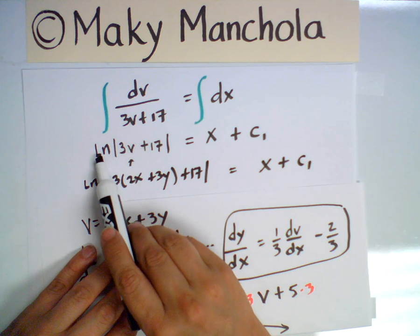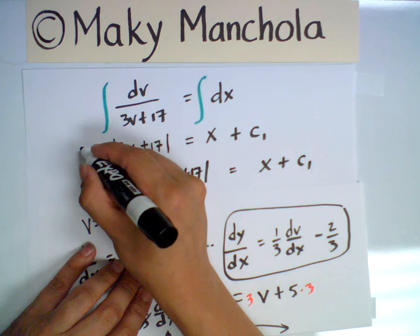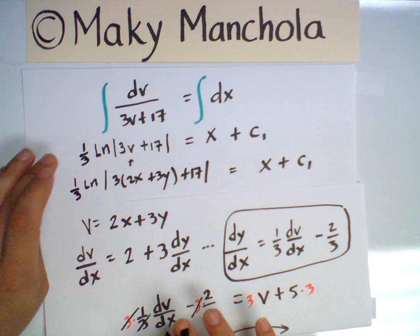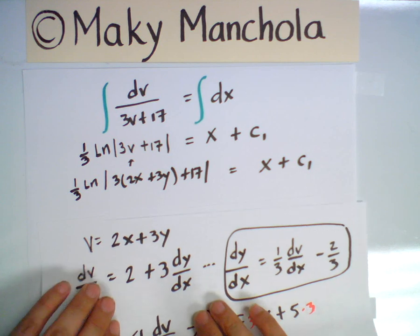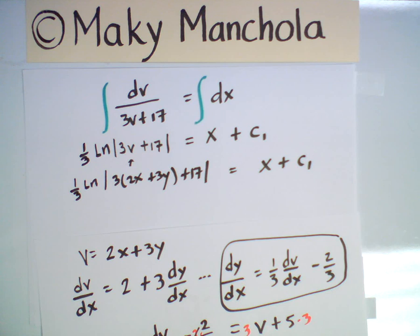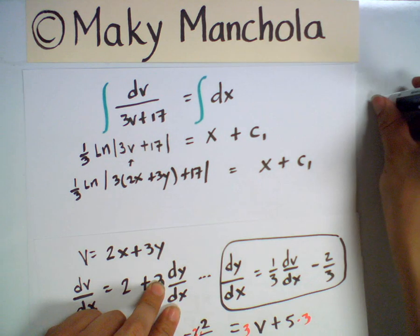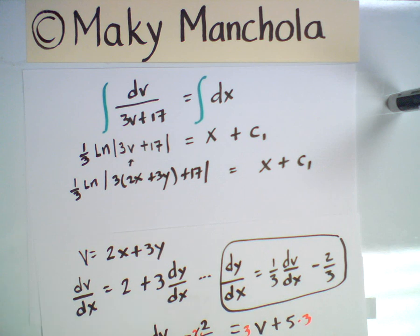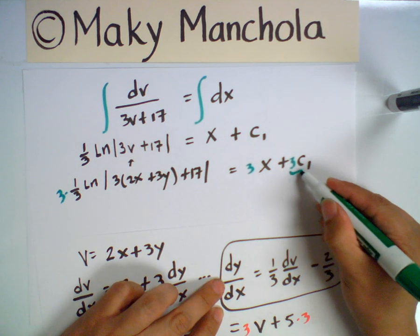We need to make a correction: when integrating dv/(3v plus 17), you get the natural logarithm but there is a constant of one-third to compensate for the 3 in front of v. With that corrected, the solution to our original problem is obtained. To isolate y, we multiply both sides by 3 to clear the one-third fraction.